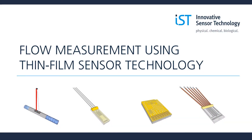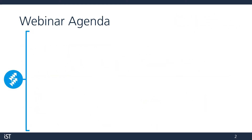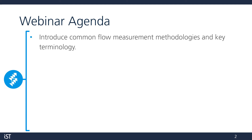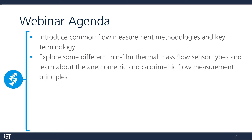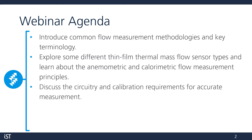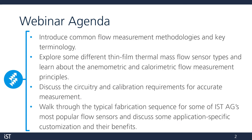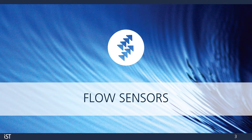Hello everyone, and thanks for joining Innovative Sensor Technology for our webinar on flow measurement using thin film sensor technology. Here's a quick overview of what we'll cover: we'll start with some flow terminology, then learn about the types of thin film mass flow sensors, discuss how they work, and go in depth exploring the anemometric and calorimetric flow principles. Then we'll take a look at a typical flow sensing circuit and wrap up with a trip to IST's clean room. Let's get started.